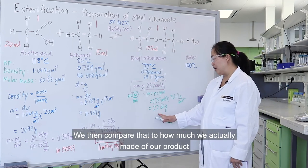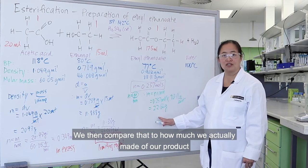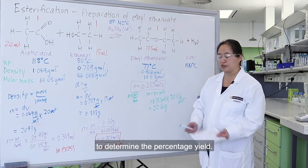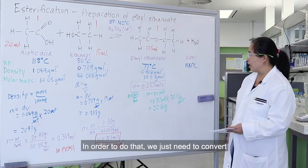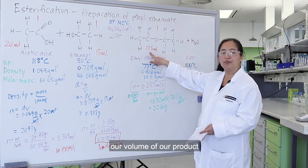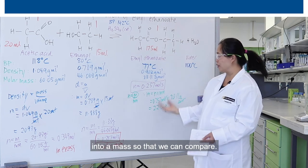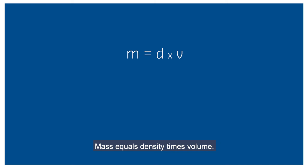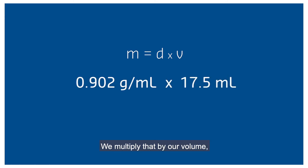We then compare that to how much we actually made of our product to determine the percentage yield. To do that, we need to convert our volume of product into a mass so we can compare. Mass equals density times volume. The density of our product is 0.902. We multiply that by our volume, which gives us 15.79 grams.